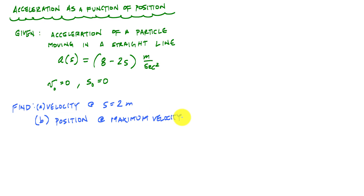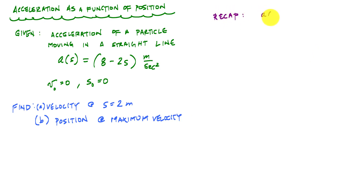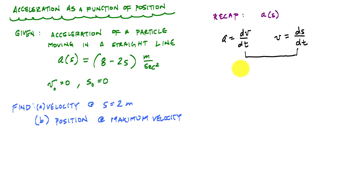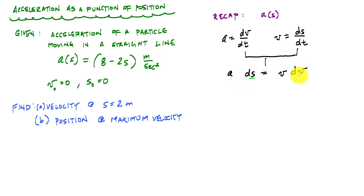With this given acceleration, you can get velocity as a function of time, position as a function of time — you can do the math to get all the information you need. As a quick recap: when we are given acceleration as a function of position, we incorporate our kinematic relationships. Acceleration is defined as dv/dt, velocity is ds/dt, and when we substitute away time by combining these two equations, we get that a ds equals v dv. This relationship allows us to relate position and velocity together. Because acceleration is given as a function of position, we group position variables on the left and velocity on the right.